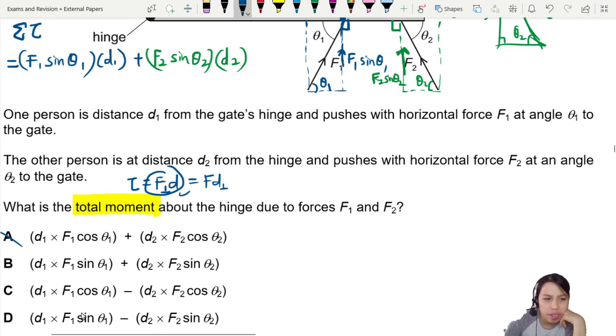d1 F1 sine theta, then d2 F2 sine theta. Why is there a minus sign? This is incorrect.